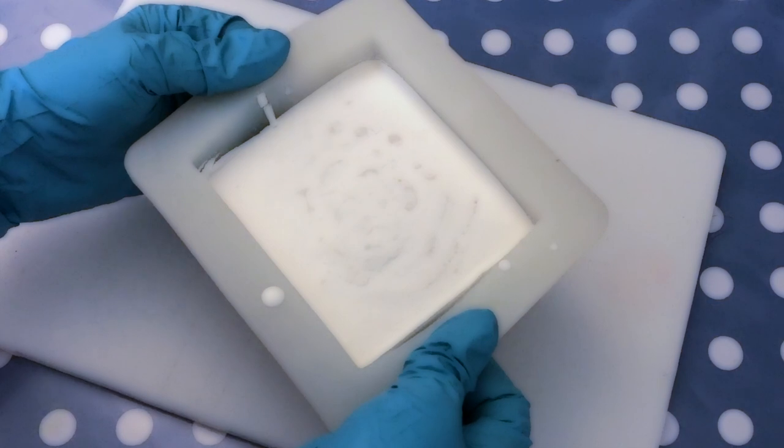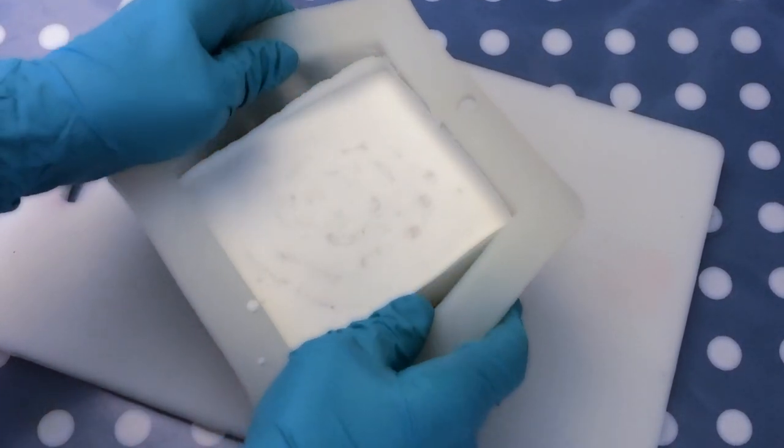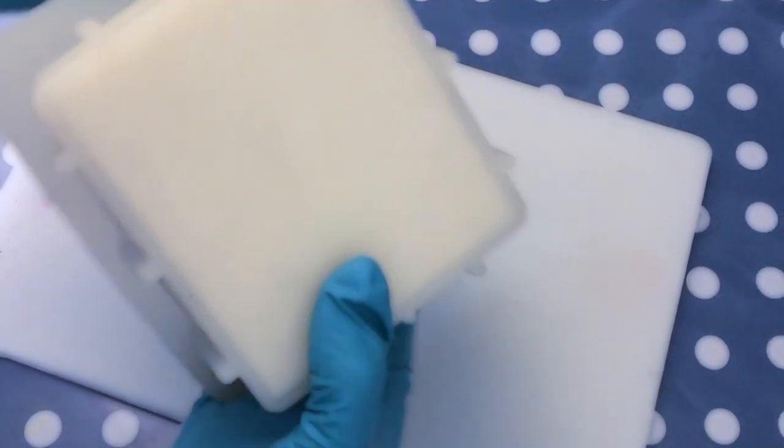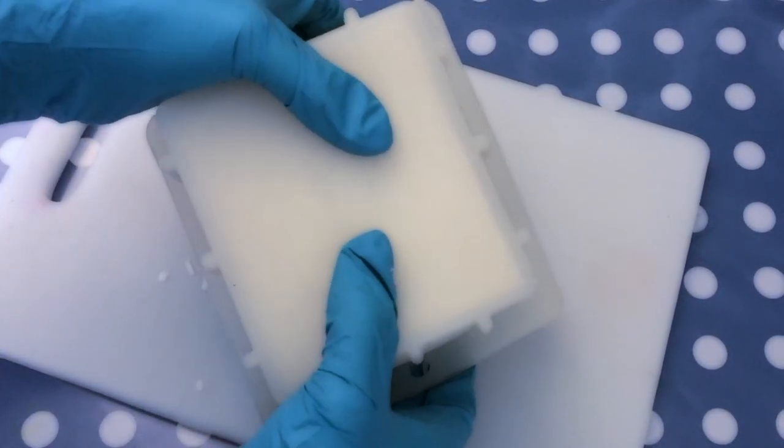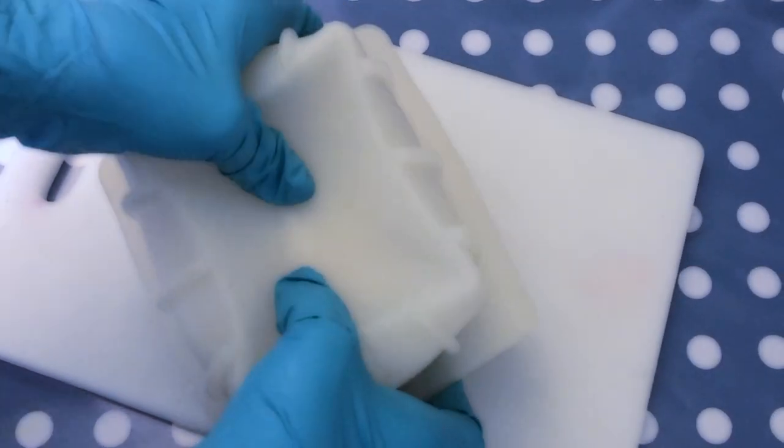Once your soap is completely hardened, you can stretch your silicone mold around the soap to make it release easier. And then what I like to do is to push it out from the back of the mold.